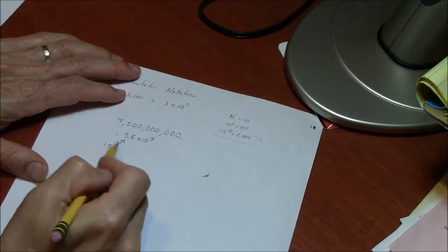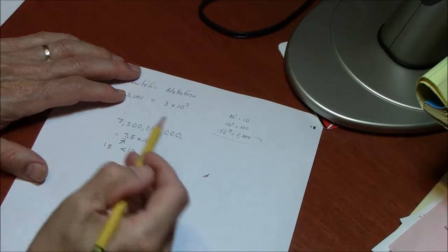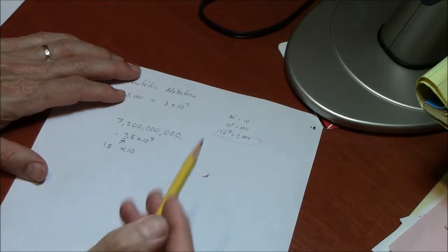The first number here in scientific notation is greater than or equal to 1, less than 10. It has to be a single digit number. It can have numbers after the decimal place.